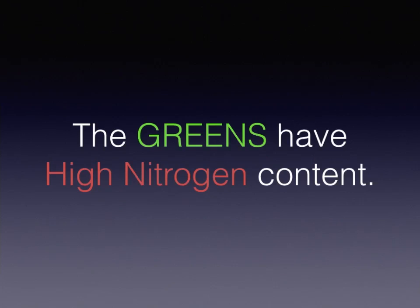The greens have high nitrogen content. Green typifies the color of this organic material, but not always. Alfalfa, algae, grass clippings, clover, hay, garden waste, vegetable scraps, seaweed, and manures are representative of this category. Manure is commonly identified with its nitrogen content, and the nitrogen is often connected with its combustible nature.